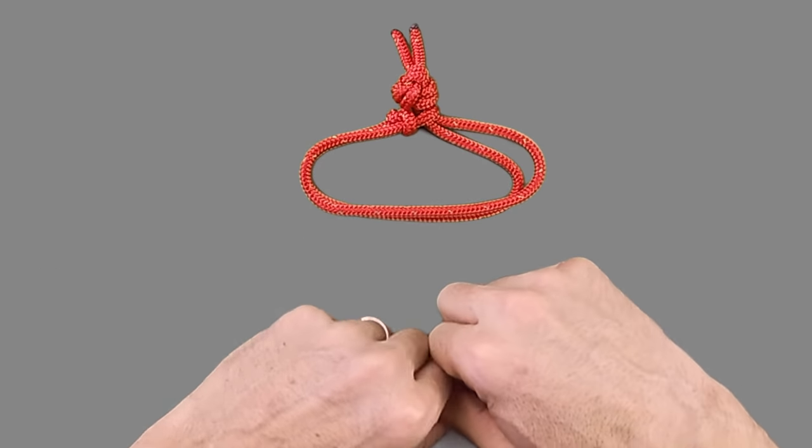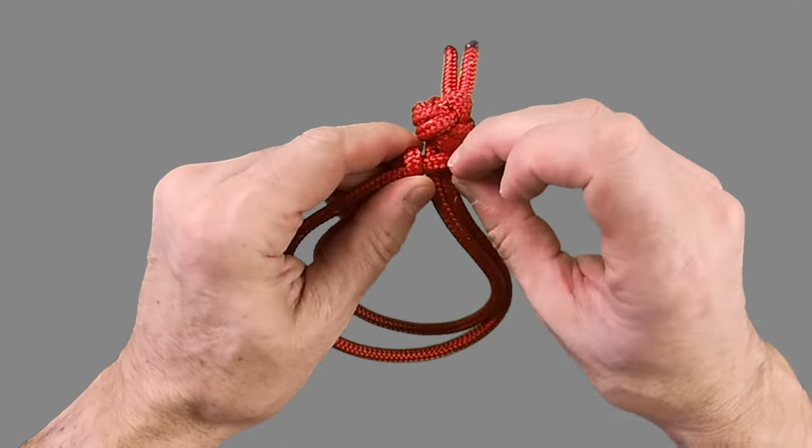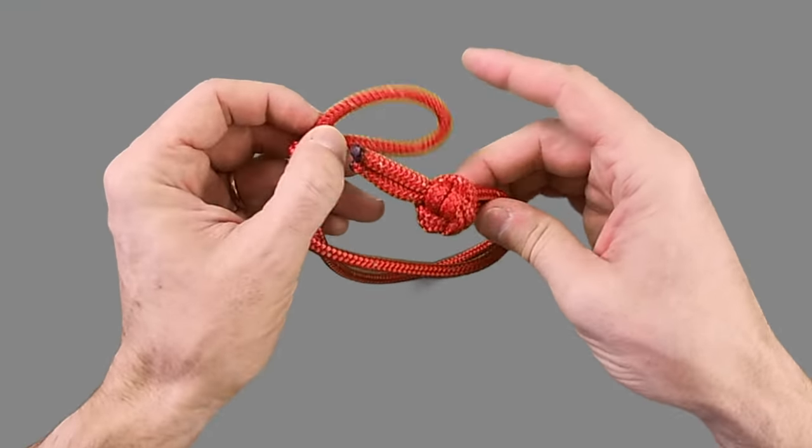To undo the soft shackle that's just a simple case of loosening your noose and then just pulling both ends of the shackle to untie the knot.